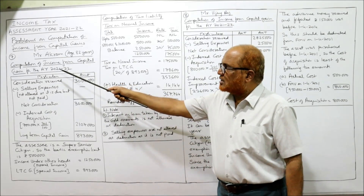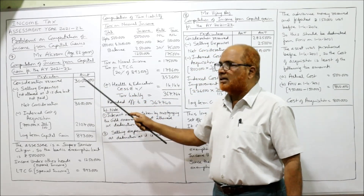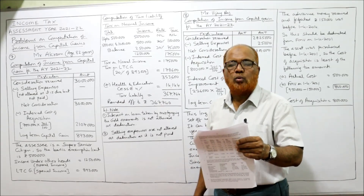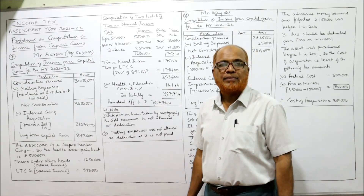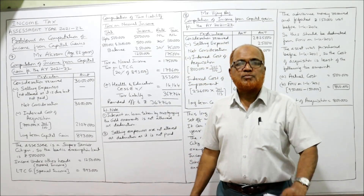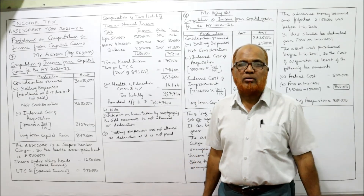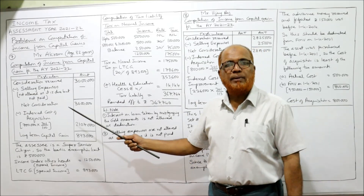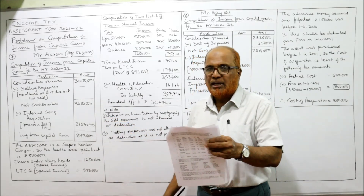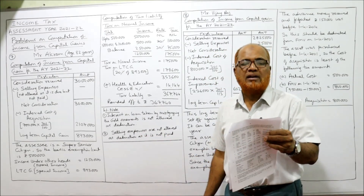Mr. Akrab, age 82 years — computation of income from capital gain for assessment year 2021-22. Consideration received: 30 lakh. Selling expenses of 4,000 are due but not paid — no deduction will be allowed. If it is paid, it would be allowed as a reduction. Put a dash and the net consideration remains 30 lakh.